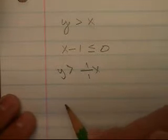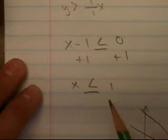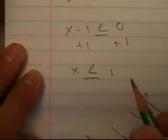And then you're going to graph the second one. So how you solve it is, x minus one is less than or equal to zero, you're going to add one to both sides, and x is less than or equal to one. And you don't have to worry about switching the sign because you're not multiplying or dividing by a negative.